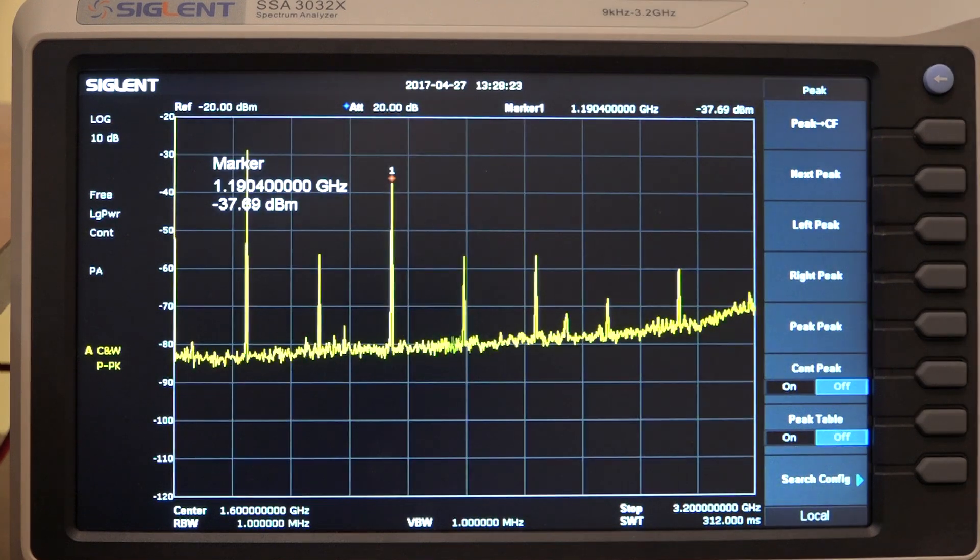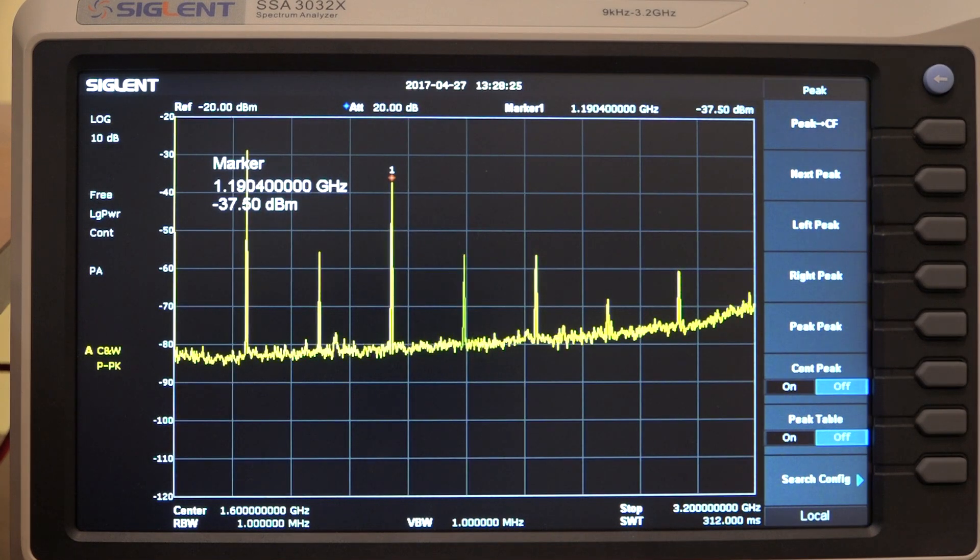The third harmonic at 1.19 GHz is pretty significant. So this would make a decent candidate for a frequency multiplier circuit.